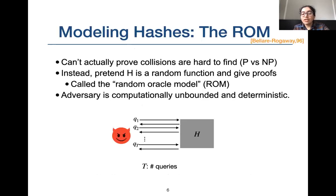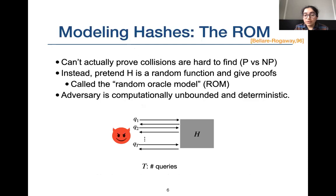When we want to study the security of any application using these functions, we often model hash functions as a random function. It's difficult to prove that finding collisions is hard otherwise. This is called the random oracle model — a small note that random functions are not practical, but nevertheless useful in proving security properties.